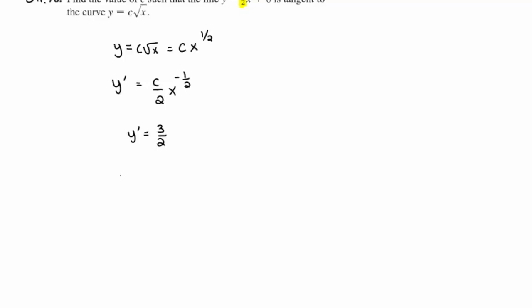So, when you do this, you get actually an interesting result. 3 halves is equal to c over 2 x to the negative 1 half. You could actually multiply both sides by 2 if you want. But, once you get to that point where you multiply both sides by 2, you're kind of stuck.